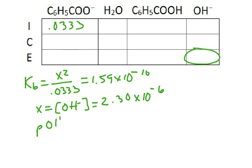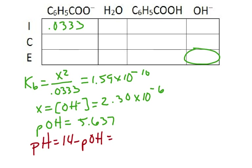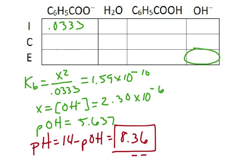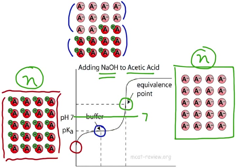Taking the negative log to get pOH, that comes out to be 5.637. Then pH equals 14 minus pOH, so that comes out to be 8.36. This is our final value, and we want two significant figures because our Ka value only had two significant figures — so two decimal places in pH. The pH of this titration at the endpoint is a little bit basic: 8.36. That's exactly what we said would happen — we're not surprised that this is a little bit higher than a pH of 7.